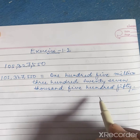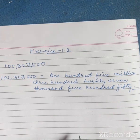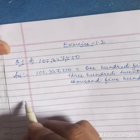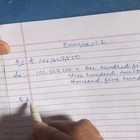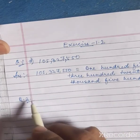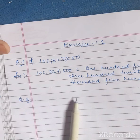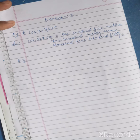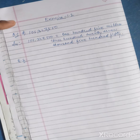Question number two: write the numerals for the following. Read the given number names and write the corresponding numerals.